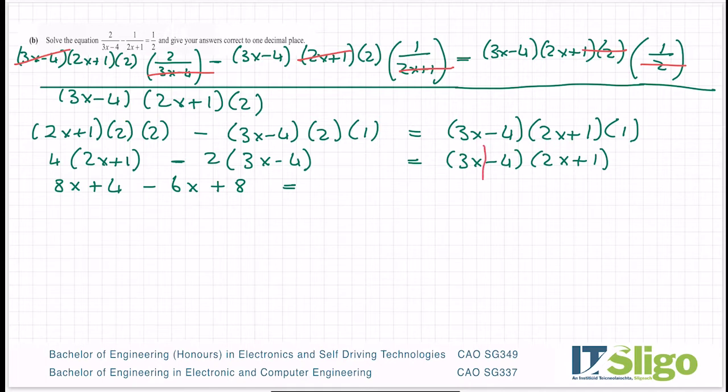So for this part you split the first bracket and then you multiply the 3x by everything in the second bracket and come back for the minus 4 by everything in the second bracket. So 8x minus 6x here is 2x. 4 and 8 is 12 equals.